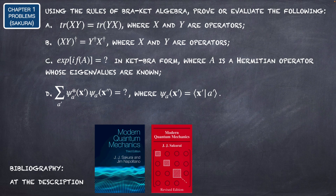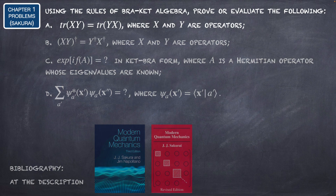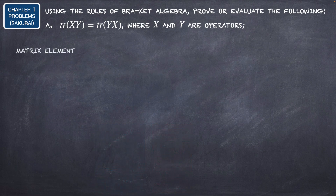For letter C, evaluate the exponential of iF(A) in ket-bra form, where A is a Hermitian operator whose eigenvalues are known. For letter D, we need to calculate a summation of a product where ψ(a', x') is the inner product between a' and x'. So let's start with letter A.